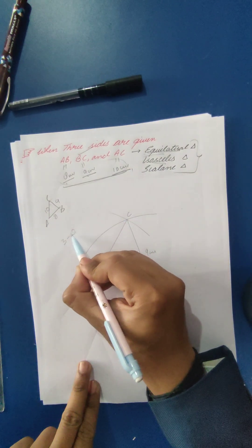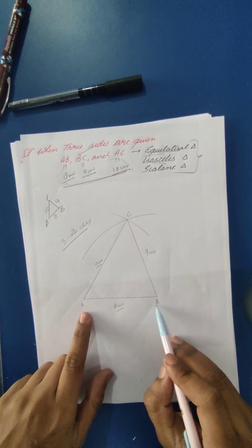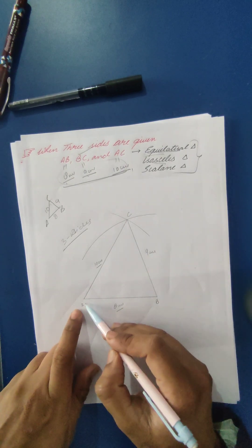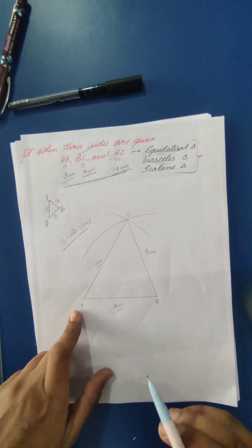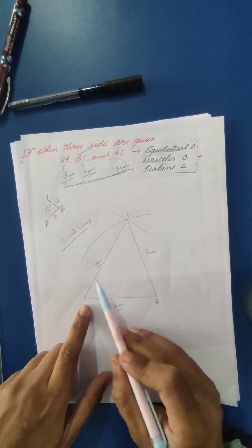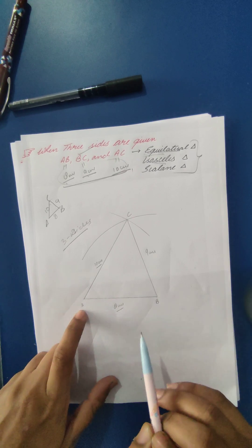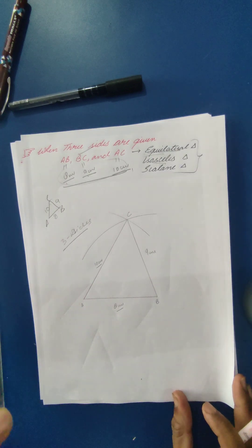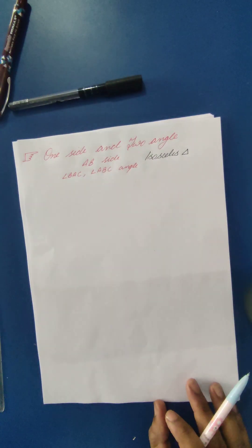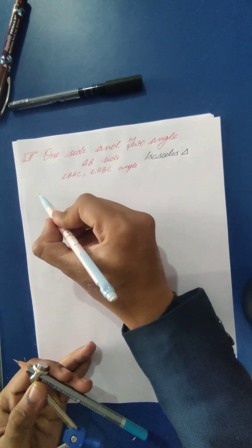Using three sides you can construct an equilateral triangle by drawing an eight centimeter line and taking arcs of eight centimeters from both A and B. For an isosceles triangle, draw eight centimeters and take arcs of nine centimeters from both points. This completes the three-sides method. Now, what do you do when one side and two angles are given?